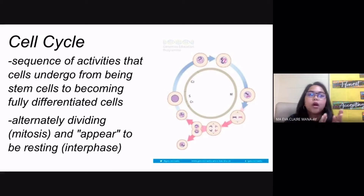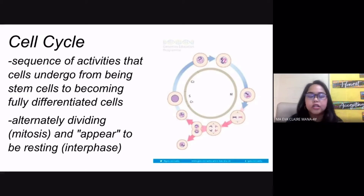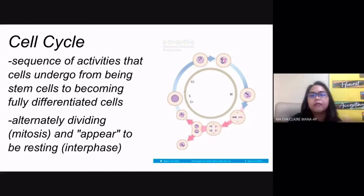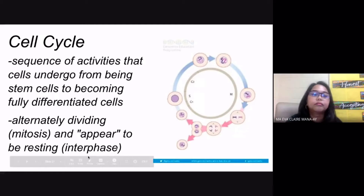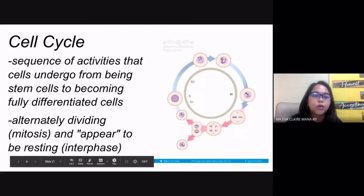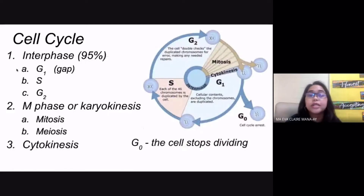If you are going to form your stem cells into the different types of cells in your body, your stem cells will have to undergo the cell cycle. There are three major stages in the cell cycle.